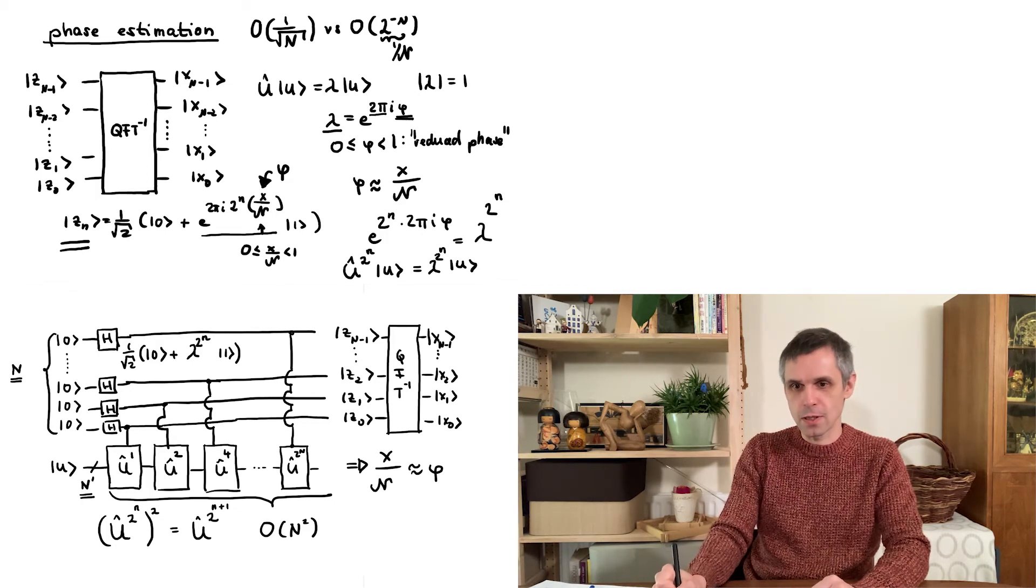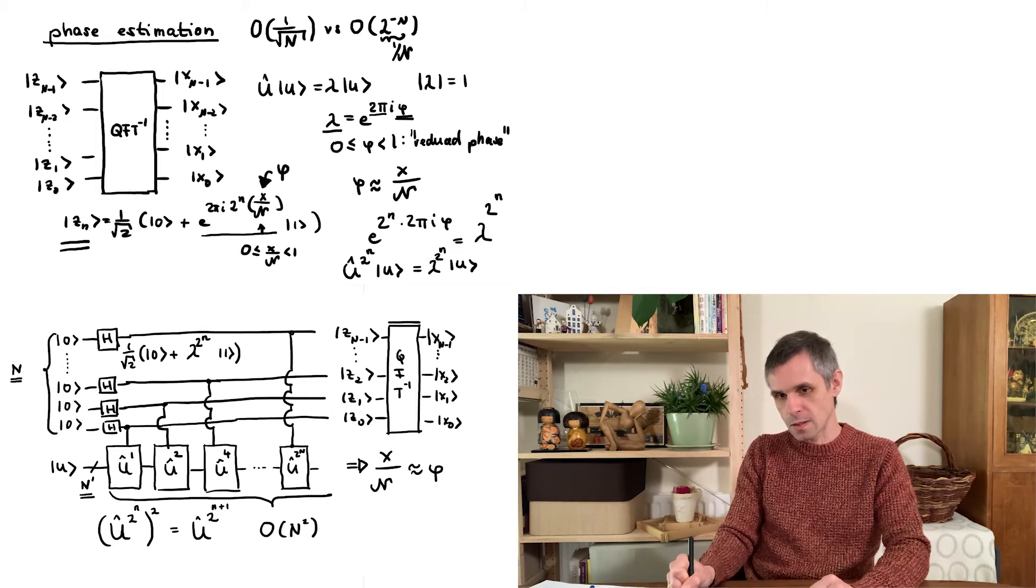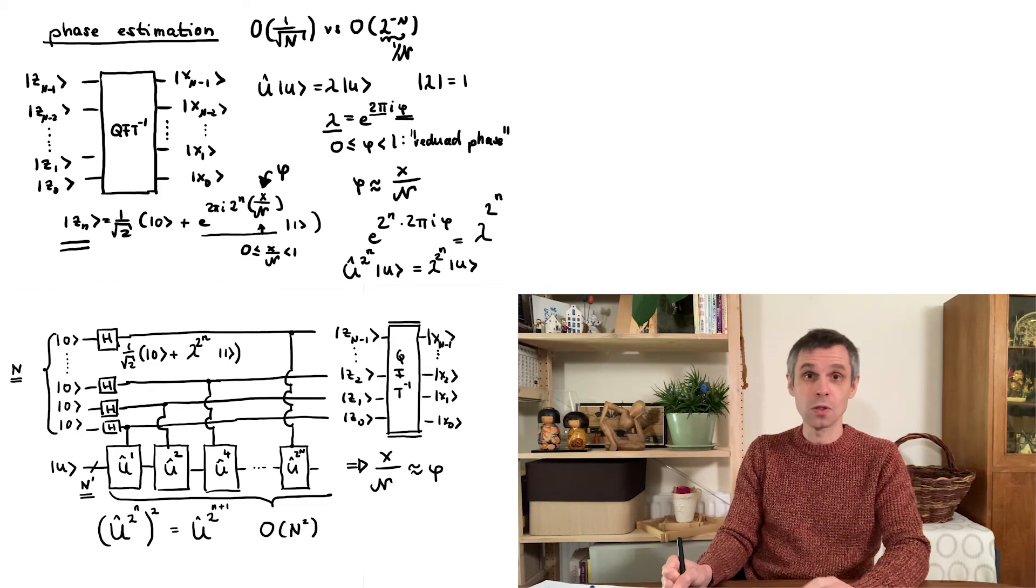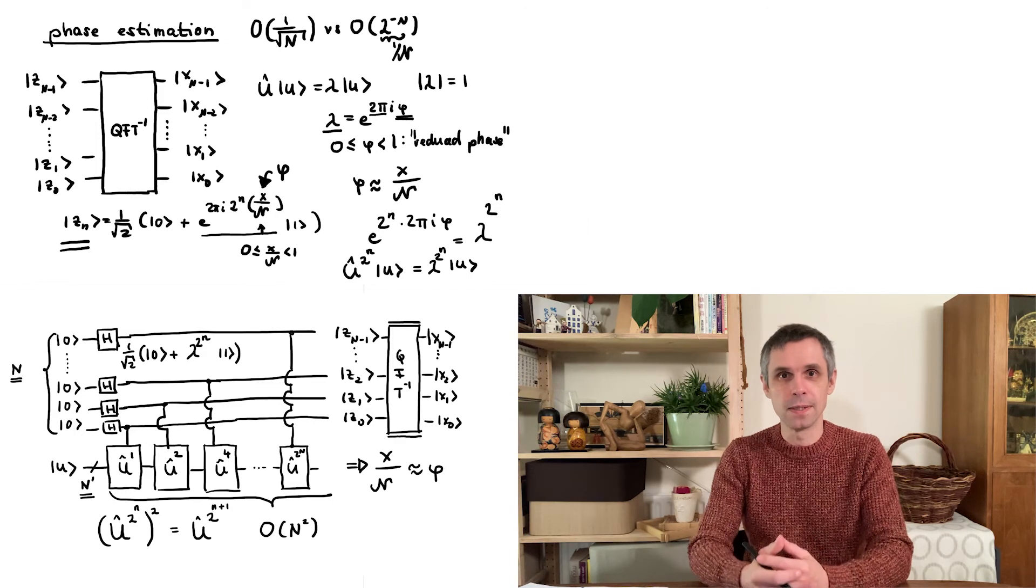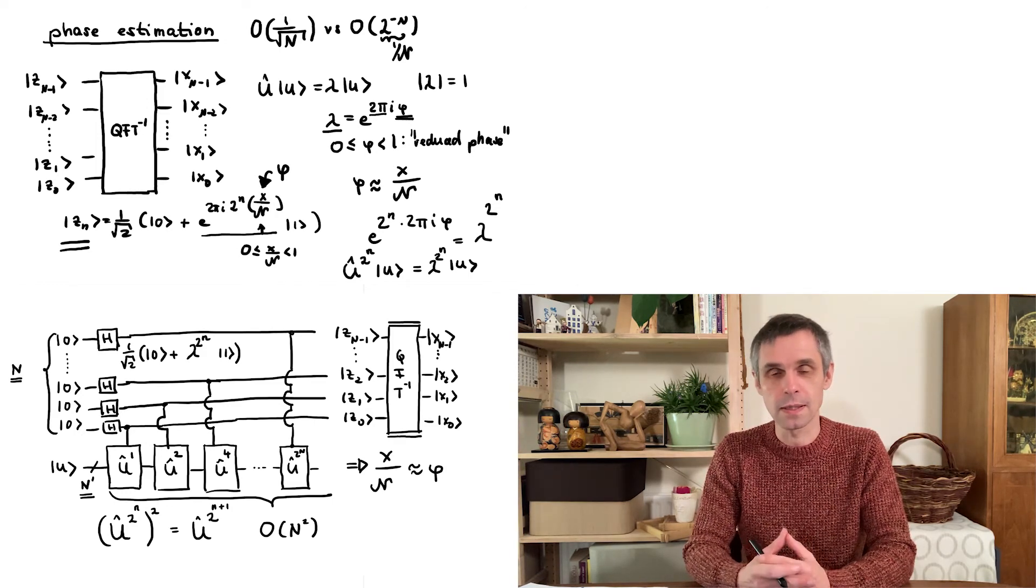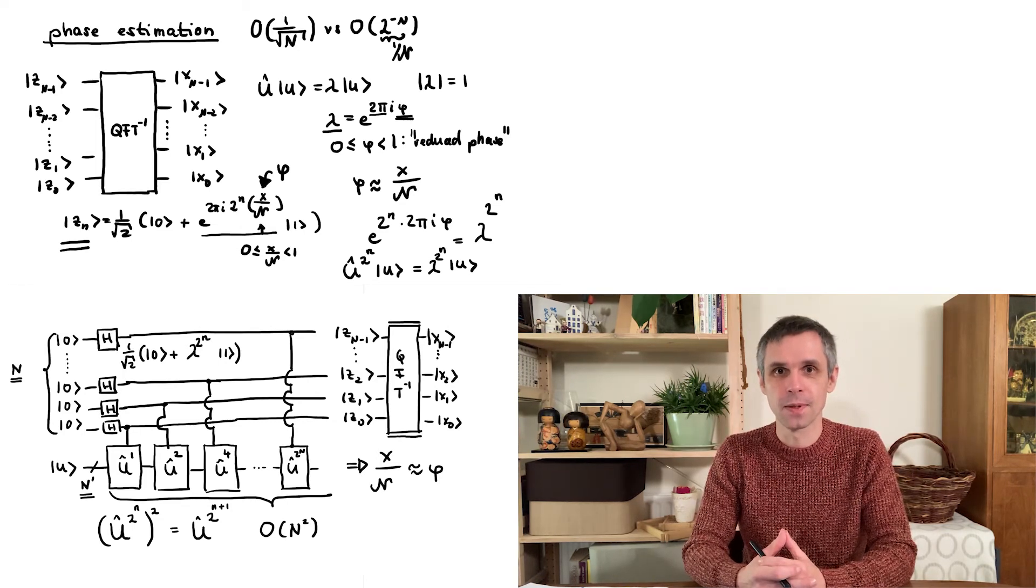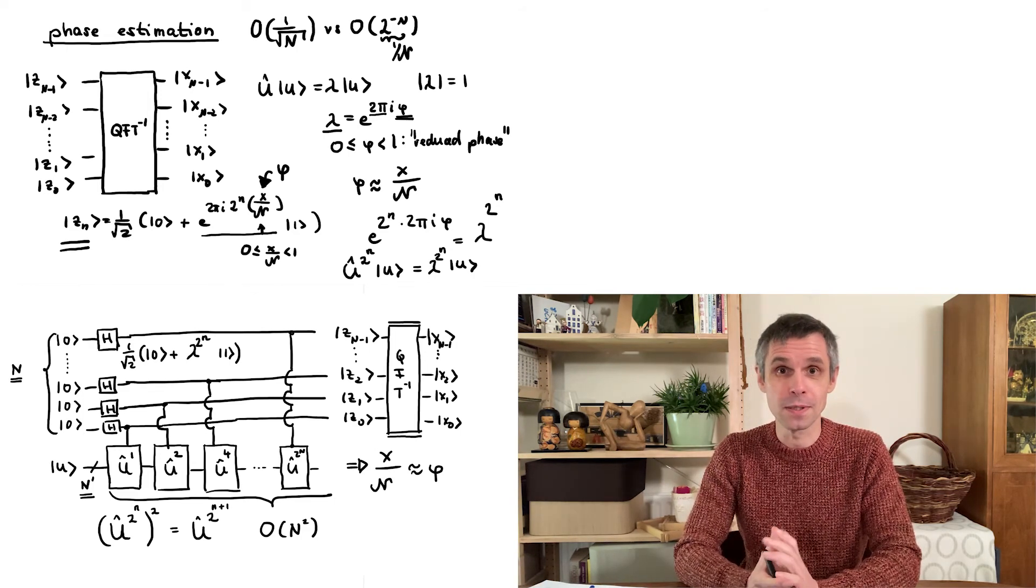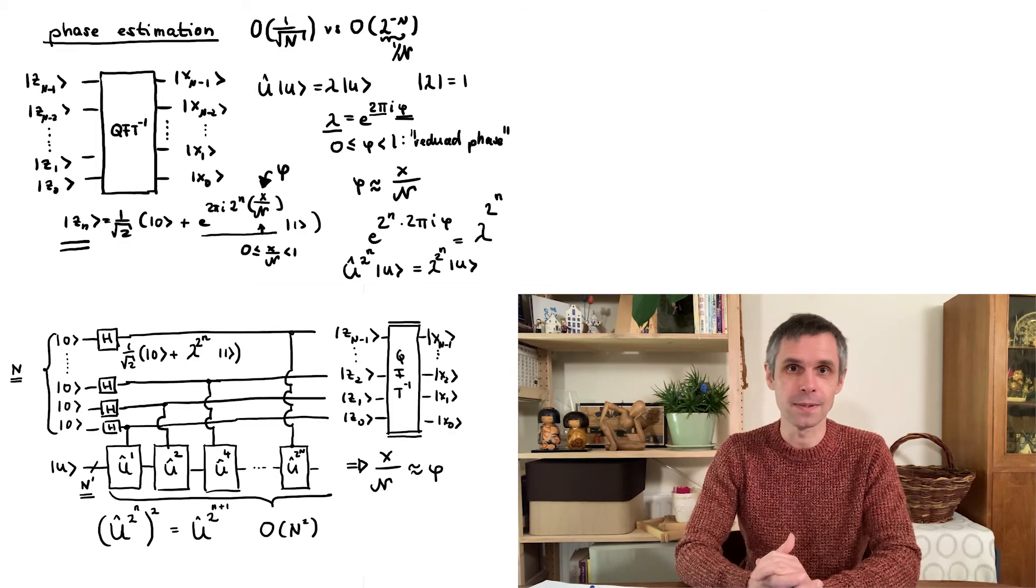So this is phase estimation. And it is indeed very general and powerful and gives us direct access to these phases phi by making use of the inverse of the quantum Fourier transform. And these unitary operators are so central and abundant in quantum mechanics because they represent, for instance, the time evolution operator and therefore also all our quantum gates. So this is very general, but we can then apply this also to some very specific unitary operators. And this indeed defines the theme of the remaining applications.